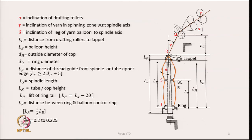Besides those, dh and dr are diameters — dr indicating the diameter of the ring, and dh the outside diameter of the cop, that is the bobbin. Lf is the distance of the thread guide from the spindle or tube upper edge, and ls indicates the length of the spindle. All these dimensions and their symbols are indicated in the diagram.